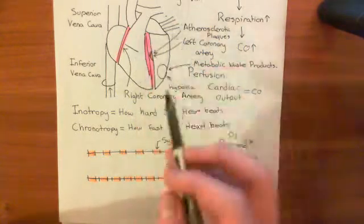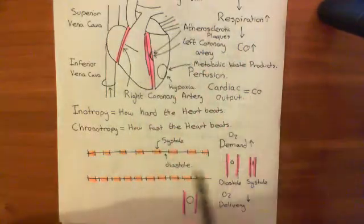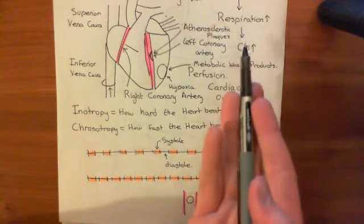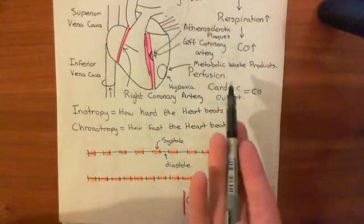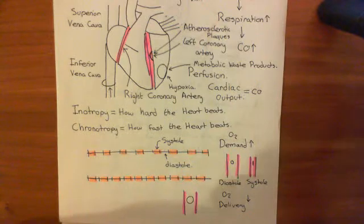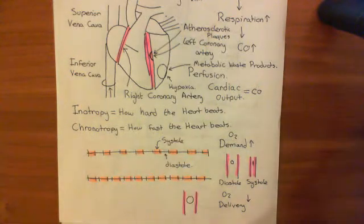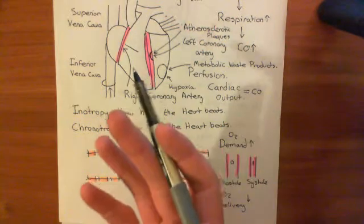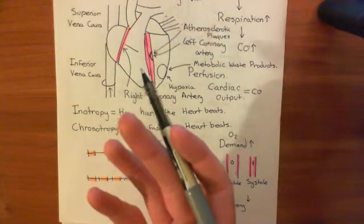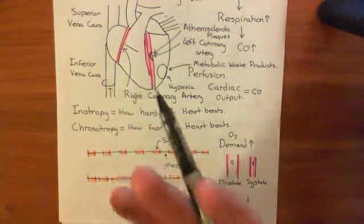But you might say, okay, but that was the whole point. The whole point of this was we needed the cardiac output to go up in order to deliver enough nutrients to our skeletal muscle. My argument to that would be the skeletal muscle will just have to cope.